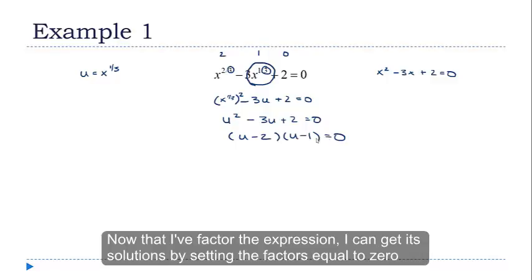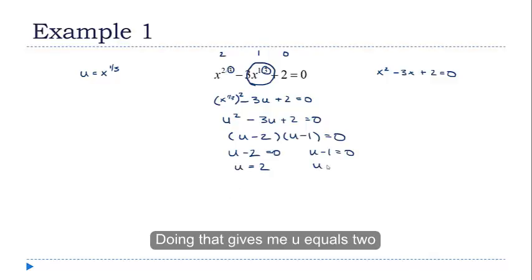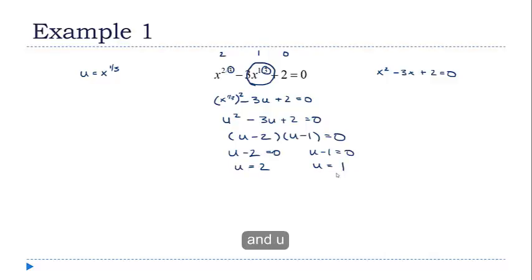Now that I've factored the equation, the expression on the left hand side, I can get its solutions by setting the factors equal to 0 and solving those smaller equations. Doing that gives me u equals 2 and u equals 1.